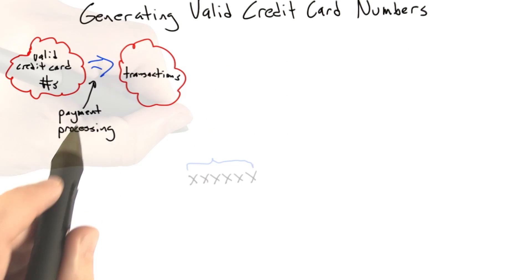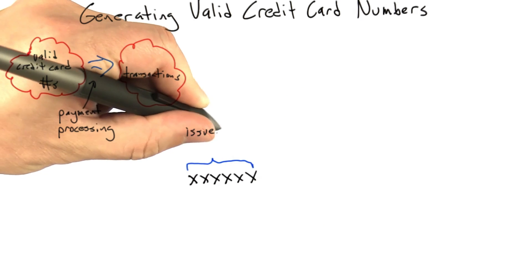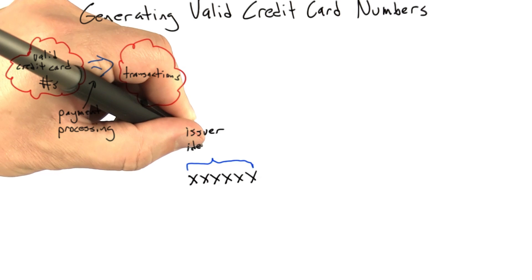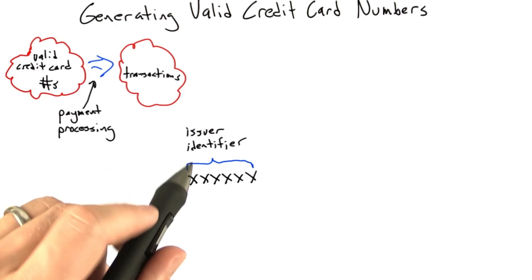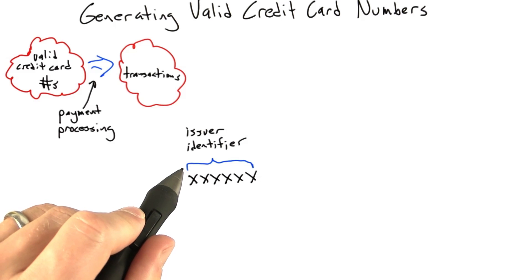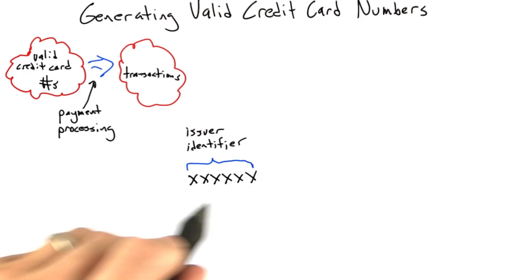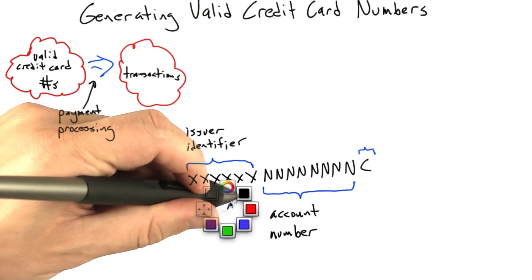So here's how those work. There's some number of digits at the start of a credit card number, let's say 6, that constitute the issuer identifier. What this means is that, for example, all of the American Express cards issued by a certain company are going to share an issuer identifier. The next set of digits, let's say 8 of them, is going to correspond to the account number for this credit card.